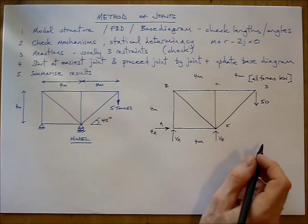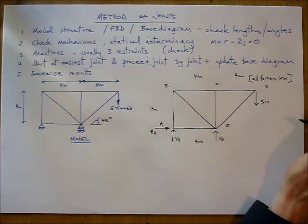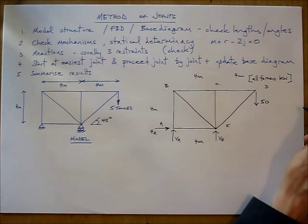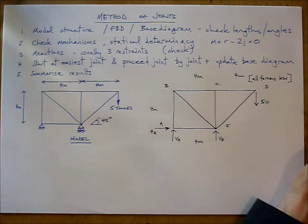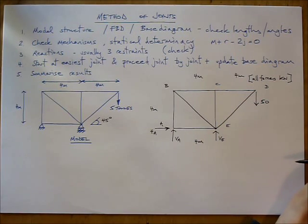The next step is to check for mechanisms. That's quite a simple step. Checking for mechanisms more or less means looking for any shapes that aren't triangular. If you end up with a square, a rectangle, a pentagon, anything like that, that should ring alarm bells. This is a nice simple shape made up of three triangles. So we're okay for mechanisms.